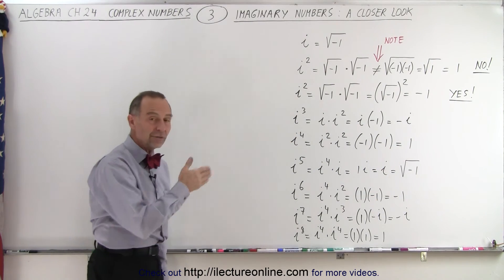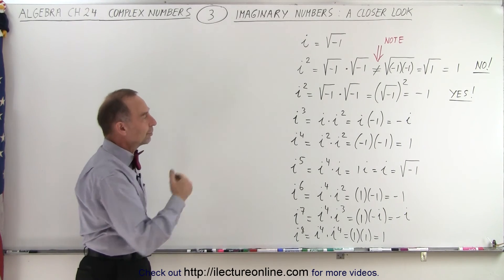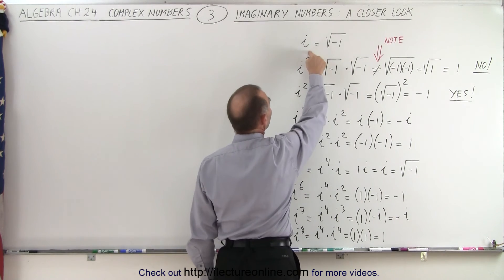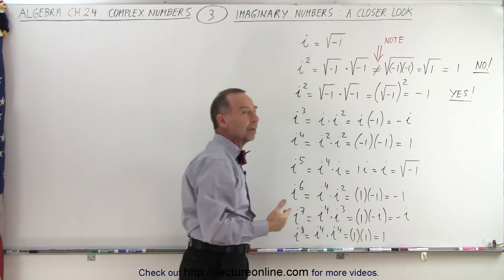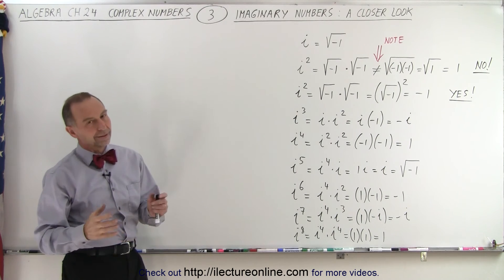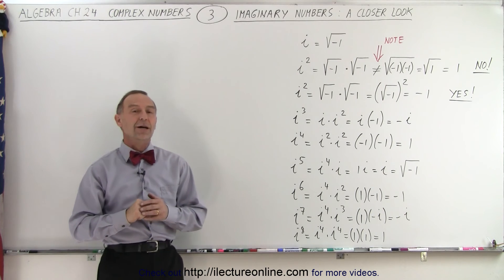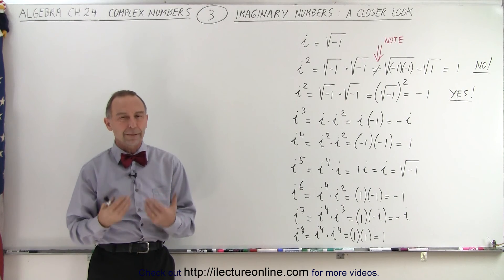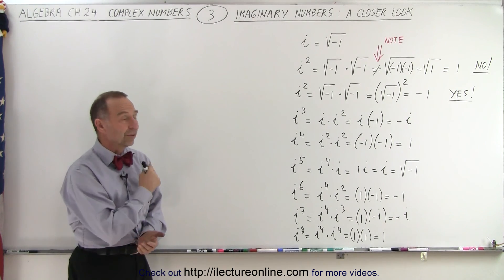At this point, you can simply continue — i to the ninth, i to the tenth, and so forth. For i to any integer power, you should be able to figure out what it equals. It will be either i, negative 1, negative i, or 1, depending on the power. If you know this, that's already a good start. You'll be able to manipulate imaginary numbers, and then later on, complex numbers.